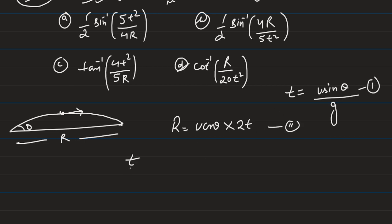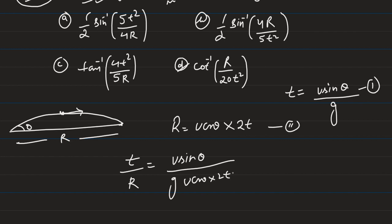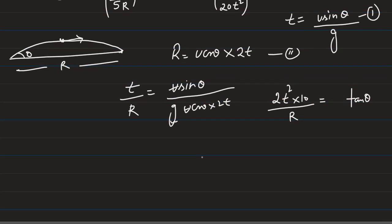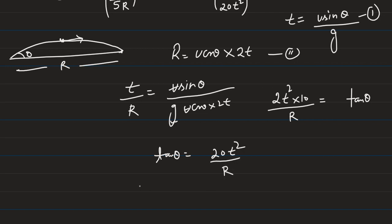From these two equations we take the ratio t/R. So t = u sin θ / g, and R = u cos θ × 2t. The u cancels, and we get sin θ / cos θ, which is tan θ. Cross-multiplying with g = 10, we get tan θ = 2t² × 10 / R, which simplifies to tan θ = 20t² / R.